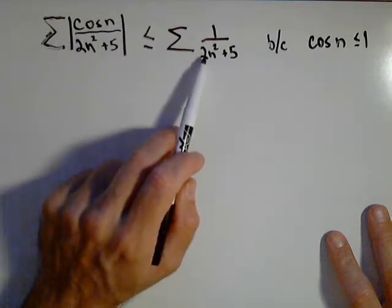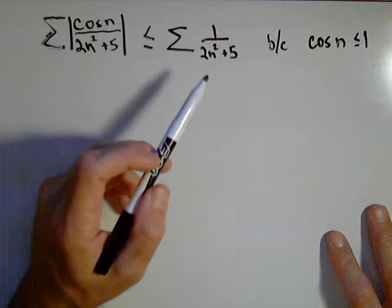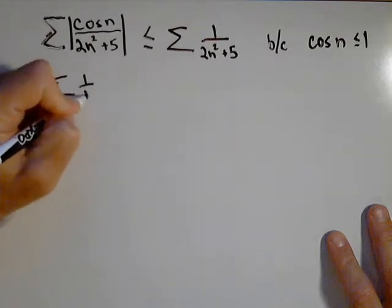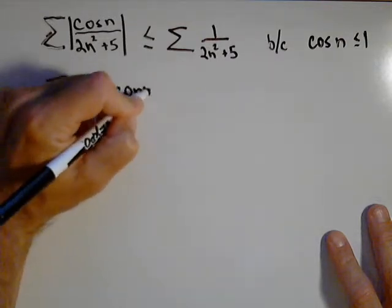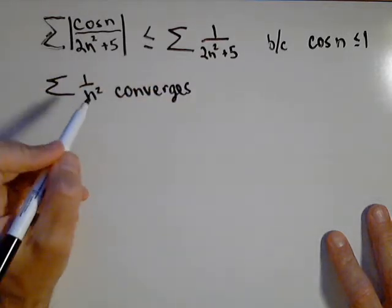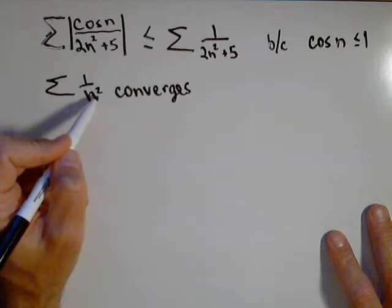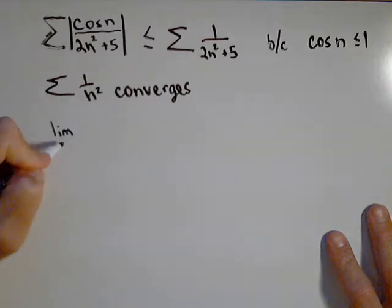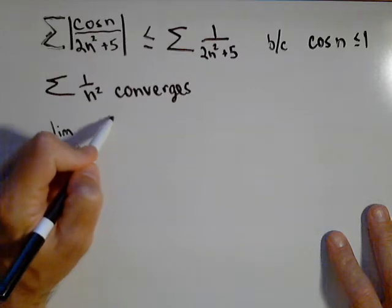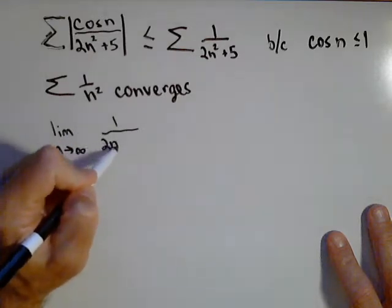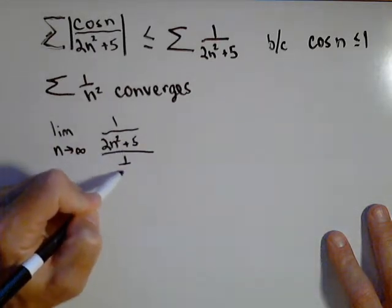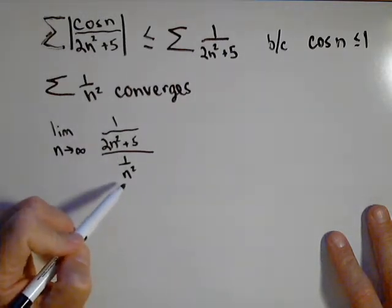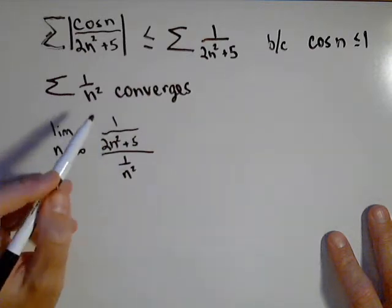We have to decide if 1/(2n² + 5) converges or diverges. There are several tests we can use; I'm a big fan of the limit comparison test. I know that the series 1/n² converges — it's a p-series of the form 1/n^p where p is greater than one, so it's convergent. With the limit comparison test, I'm going to take the limit as n → ∞ of [1/(2n² + 5)] divided by [1/n²]. What's important is your choice of comparison — you want to choose something you'll be able to calculate the limit of.